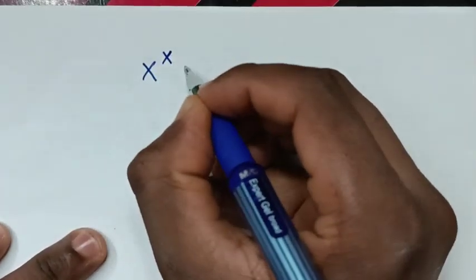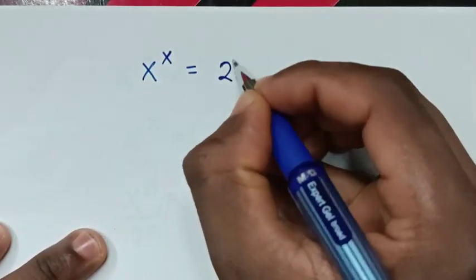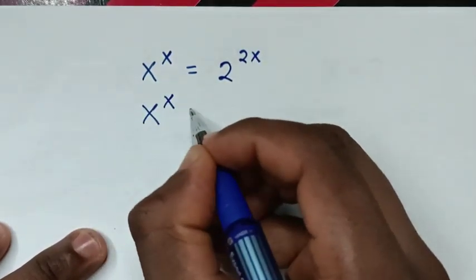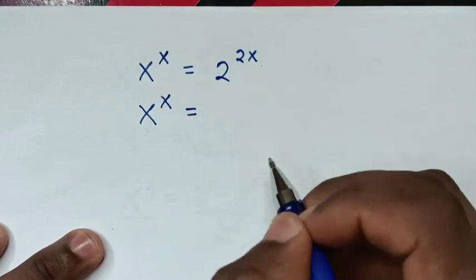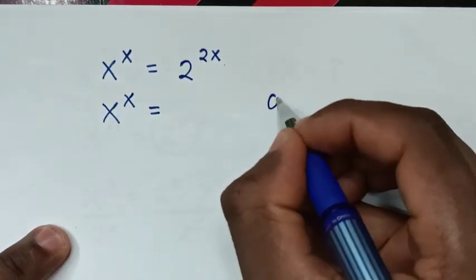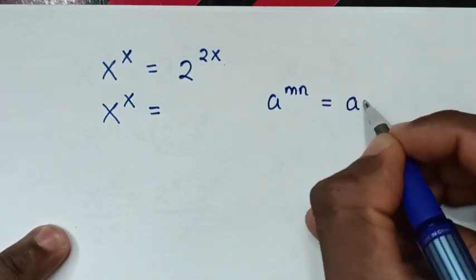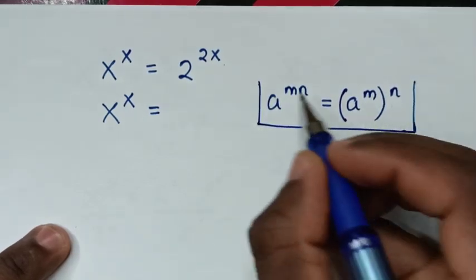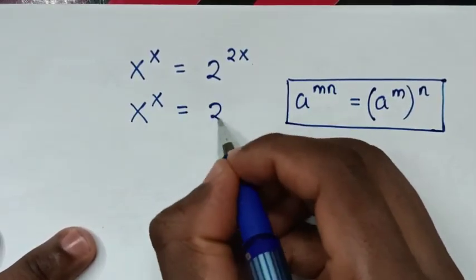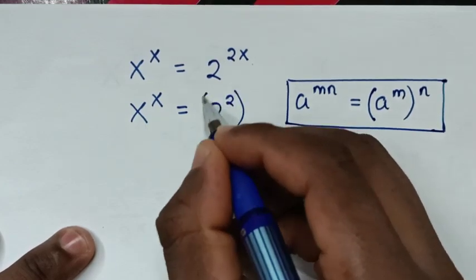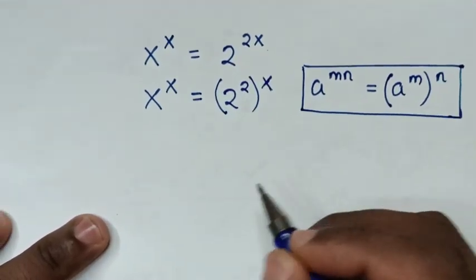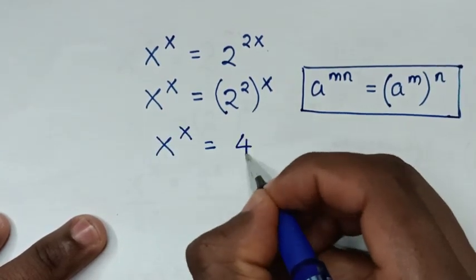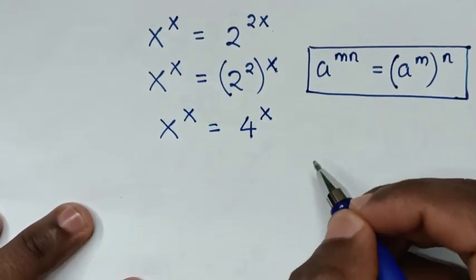To solve using another method: from x power of x is equal to 2 power of 2x, our equation will be x power of x is equal to 2 power of 2x. We apply the exponential rule that a power of mn is equal to a power of m bracket power of n. So it will be 2 power of 2 bracket power of x. Since 2 power of 2 is 4, this becomes 4 power of x.